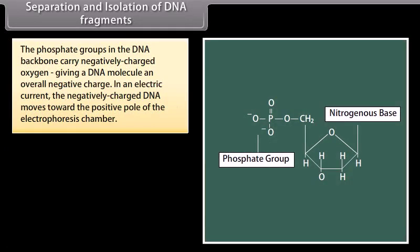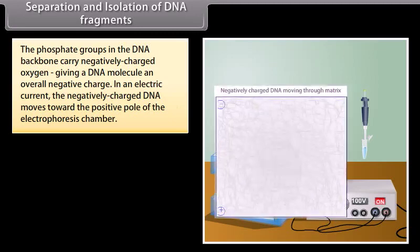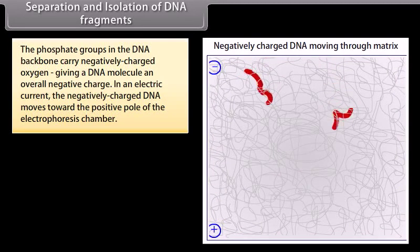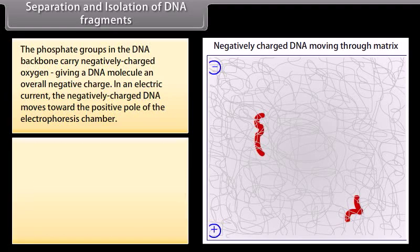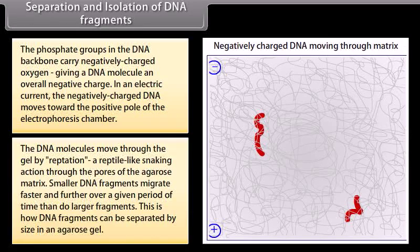The phosphate groups in the DNA backbone carry negatively charged oxygen, giving a DNA molecule an overall negative charge. In an electric current, the negatively charged DNA moves towards the positive pole of the electrophoresis chamber. The DNA molecules move through the gel by reptation — a reptile-like snaking action through the pores of the agarose matrix. Smaller DNA fragments migrate faster and further over a given period of time than do larger fragments. This is how DNA fragments can be separated by size in an agarose gel.